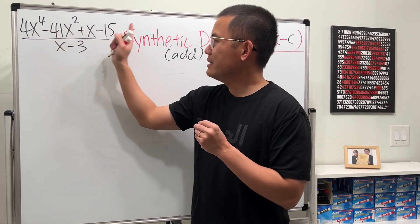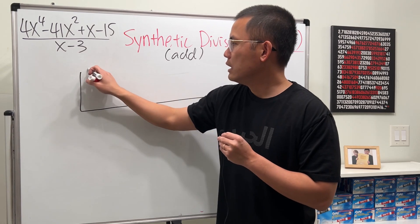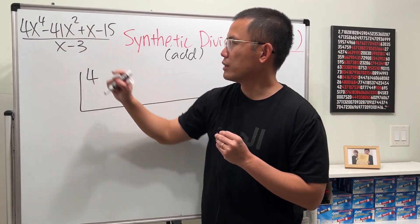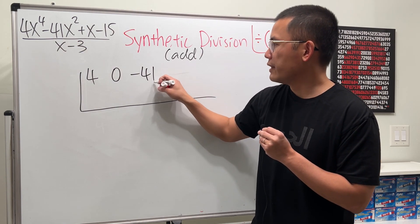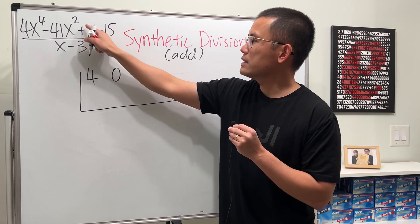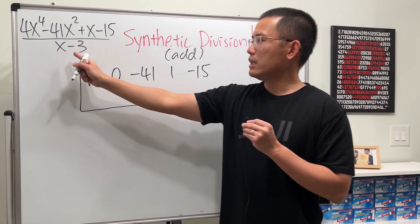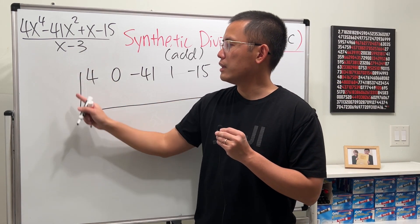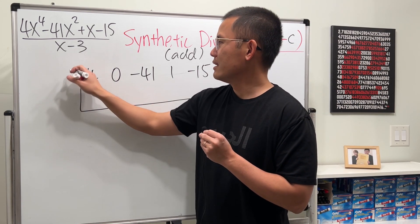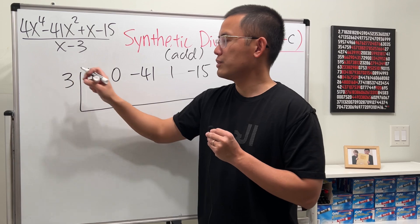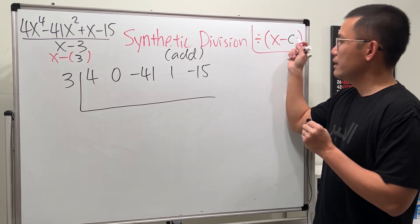Now let's do one more. We have this divided by that. So let's go ahead and set this up. Here we have 4. x to the fourth power. But there's no x to the third power, right? So that's 0x to the third power. And then minus 41x squared plus 1x. So it's 1. And lastly, we have a minus 15. Now, if this is x minus 3, then what do we put down right here? If you say it's 3, then it's correct. You always do the opposite. This is minus 3, so this is actually a 3 right here. So x minus 3, right? In this form.